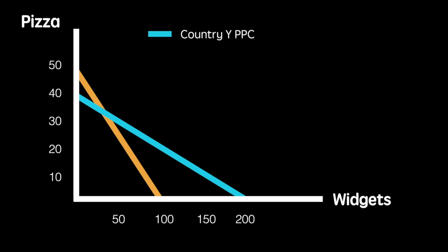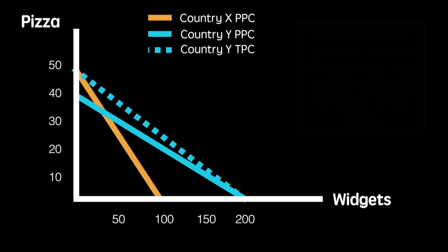After specializing, each country will focus on either pizza or widgets. With the 200 widgets they've produced, Country Y can now trade for up to 50 pizzas from X. This allows improved outcomes for their economy through trade.